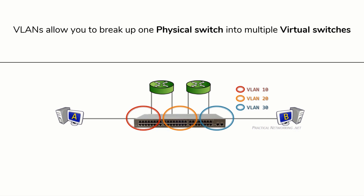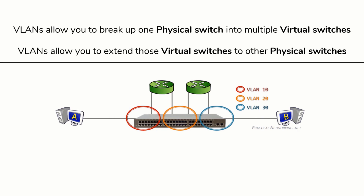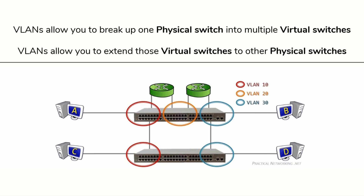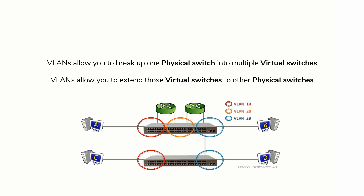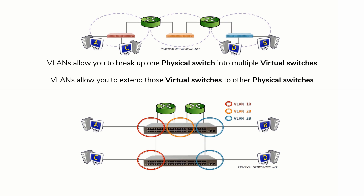So, the first major function of a VLAN is that VLANs allow you to break up one physical switch into smaller virtual mini-switches. The second major function of VLANs is that VLANs allow you to take those virtual mini-switches and extend them to other physical switches. Notice here, we've extended VLAN 10 and VLAN 30 to another physical switch. Each switch's VLAN configuration is independent, which means on the top switch, someone had to configure three ports in VLAN 10, and on the bottom switch, someone had to configure two ports in VLAN 10. This links the VLAN 10 ports in the top switch to the VLAN 10 ports on the bottom switch. You could consider one view the logical topology and the other the physical topology.